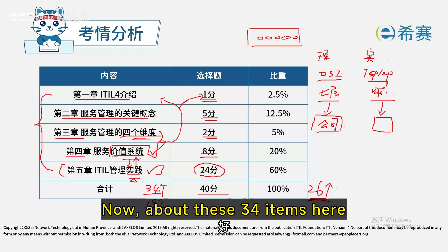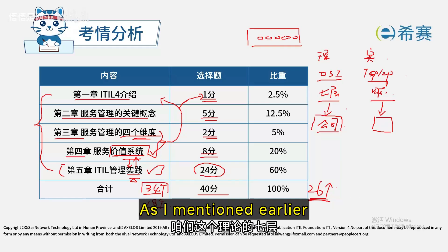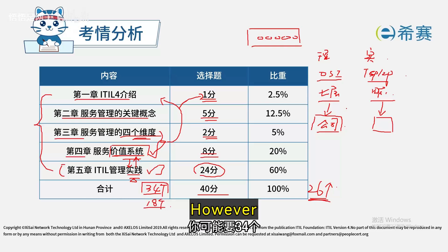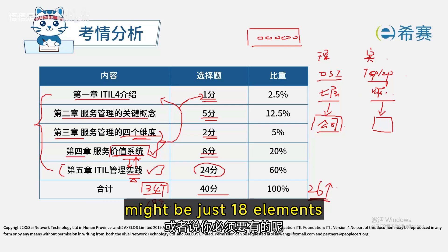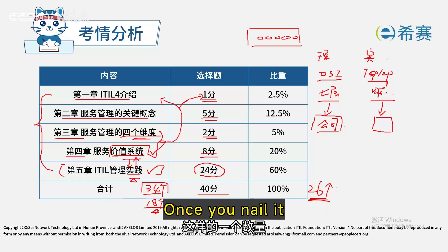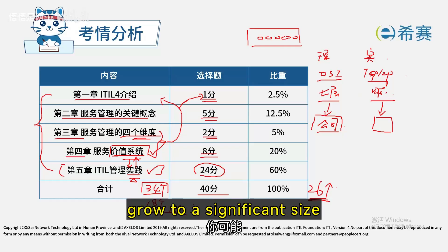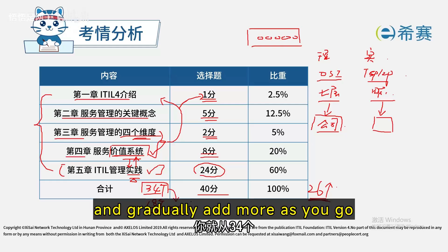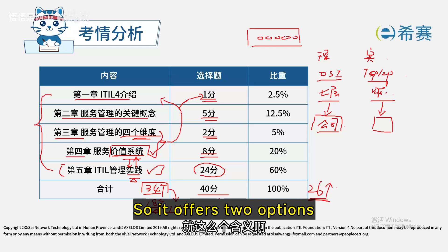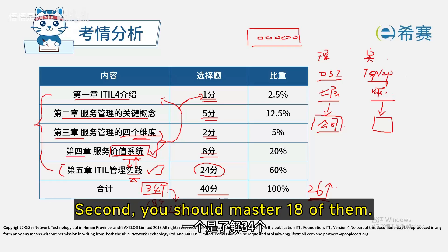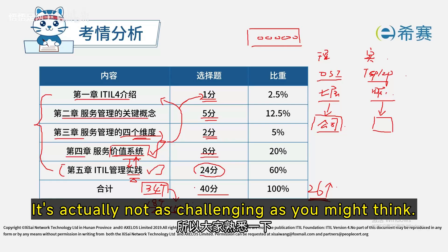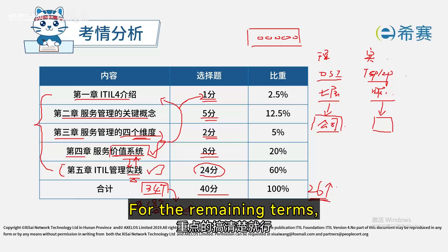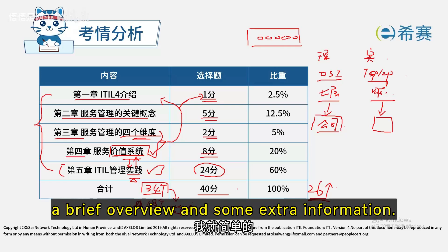These 34 items are similar to that seven-layer model. To build a fully developed system you might need all 34 components, but in practice when starting out, the bare essentials might be just 18 — roughly 15. Once you've got those sorted you'll be up and running. As you grow, you can start adding more from the remaining 34. So it breaks down into two categories: 34 to be familiar with, and 18 to master thoroughly.